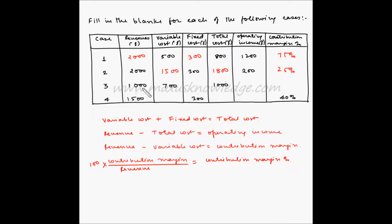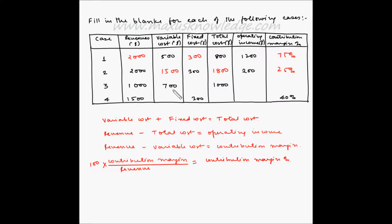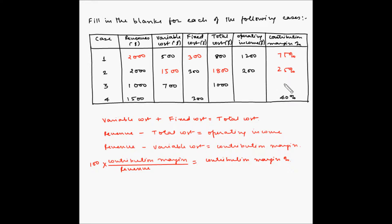For the third case, revenue is 1000 dollars, variable cost is 700 dollars. We don't have the fixed cost, total cost is 1000 dollars, and we don't have the operating income or contribution margin percentage. Since variable cost plus fixed cost equals total cost, 700 plus x equals 1000, so fixed cost x equals 300.